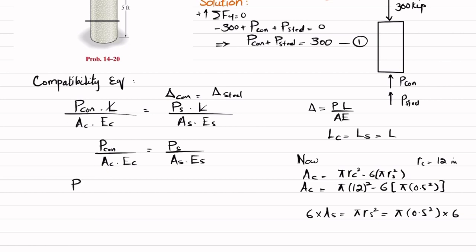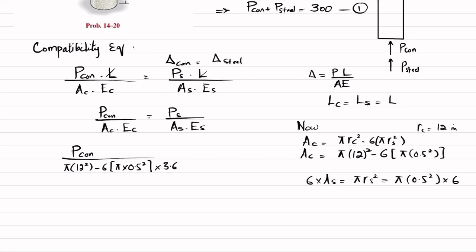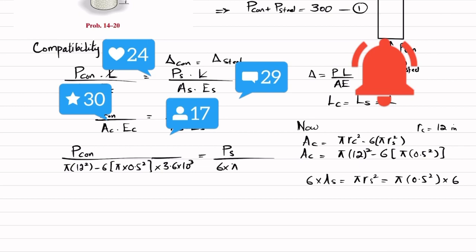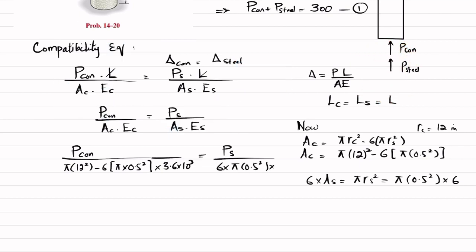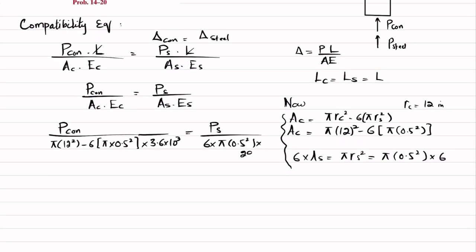Substituting into the compatibility equation: P_concrete divided by [π(12²) − 6π(0.5²)] × (3.6×10³) equals P_steel divided by [6π(0.5²)] × (29×10³). Solving this gives P_concrete = 11.7931 × P_steel. This is equation number 2.